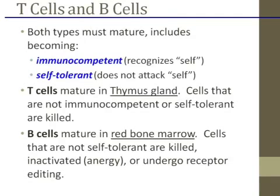If a T cell does start to mount an attack on a normal cell, other T cells and white blood cells around it will notice it's not following the rules. Another cell will come by and put a little protein on its cell surface, tagging it for death, and then a macrophage will come and swallow it. So yeah, that's happening like right now — it's very much like actual battle strategy.